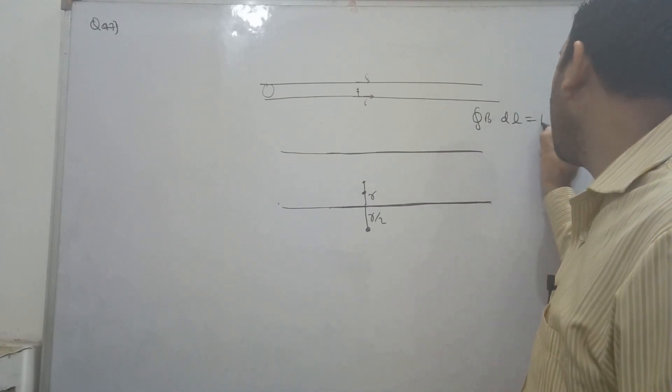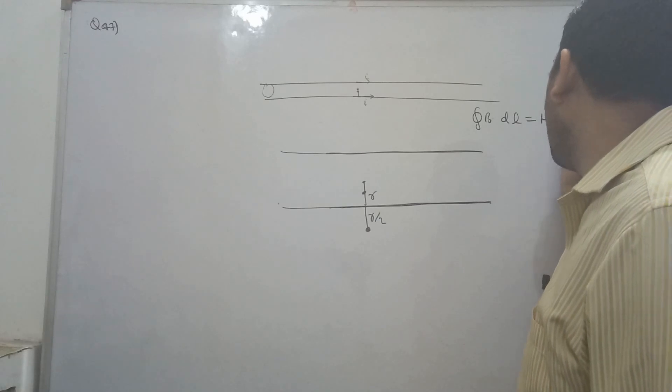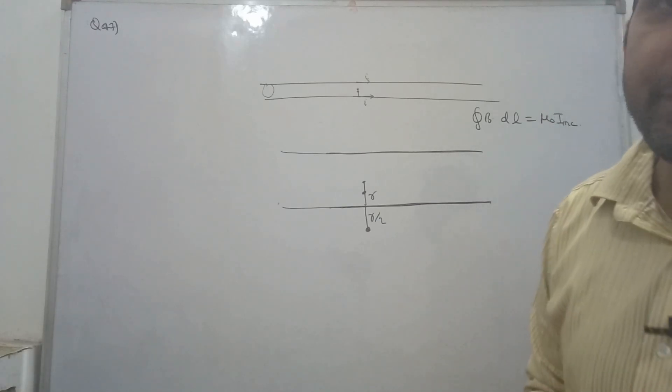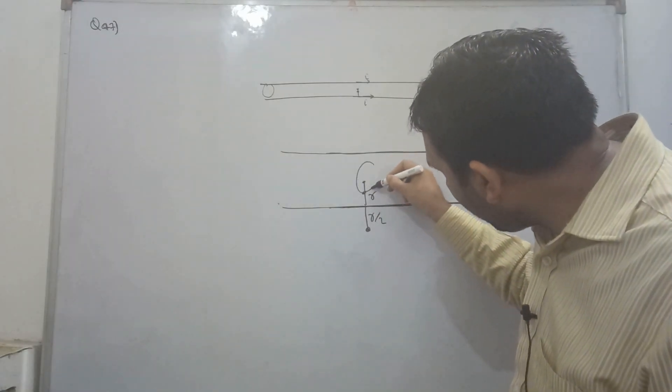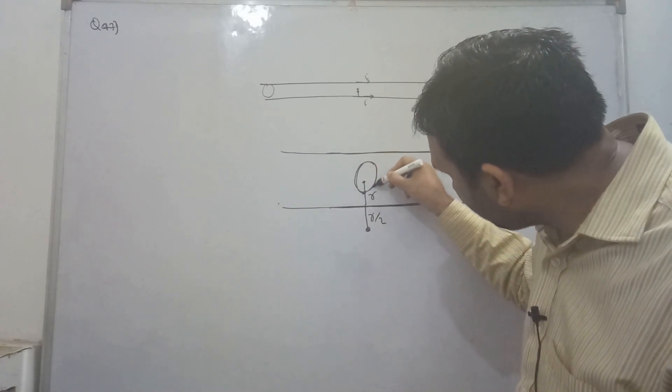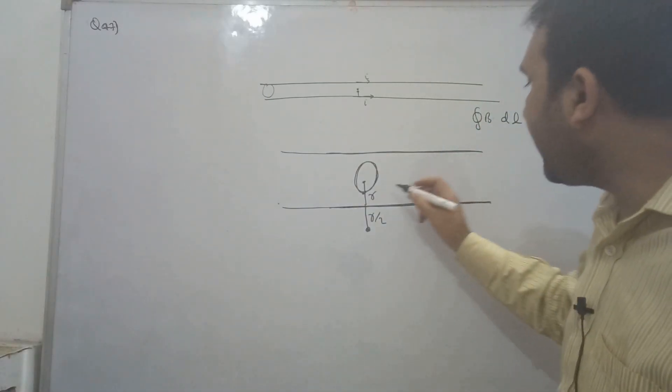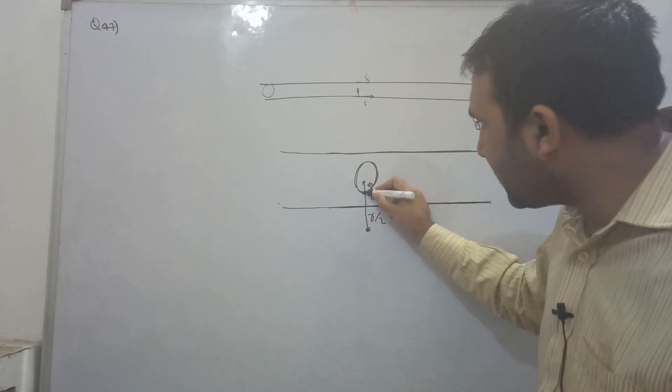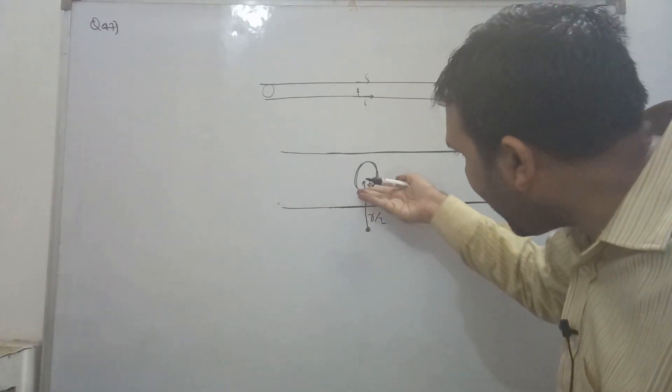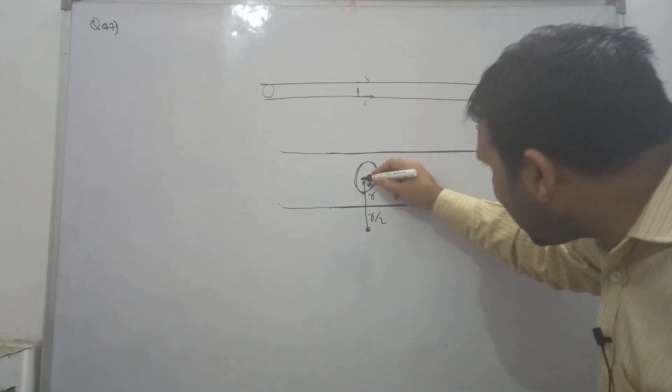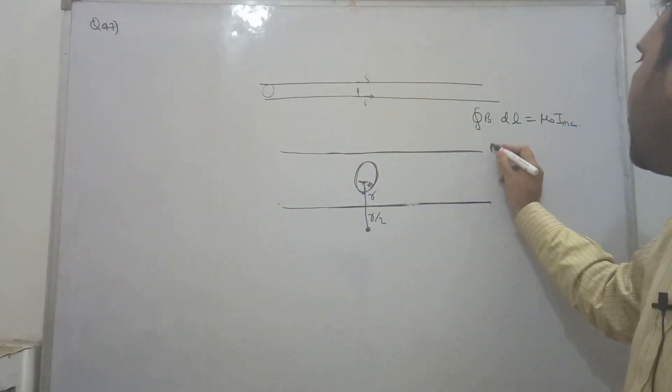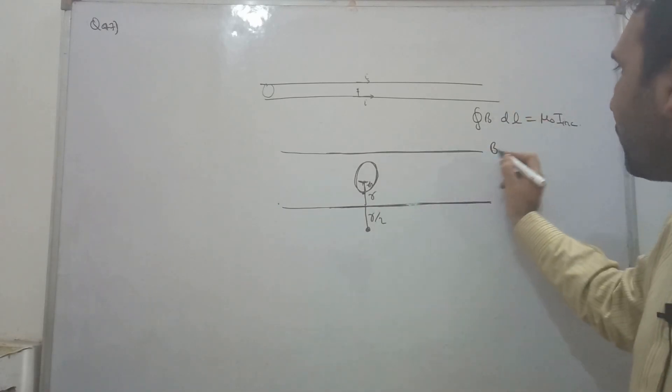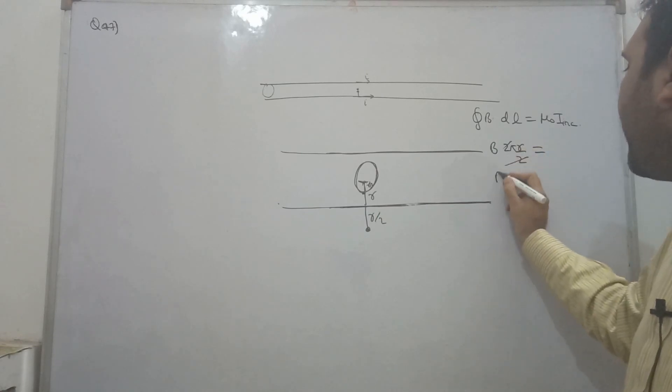So this is b dot dl equals mu naught i enclosed. This is Amperian loop. We have to make an Amperian loop. So I have to make a loop at r by 2 from the center axis. If I make a loop, this is 2 pi r by 2, so this is b into pi r equals mu naught i enclosed.